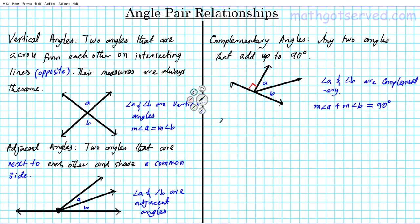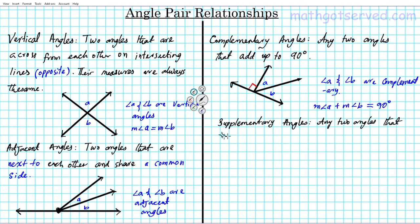The next terminology to keep in mind is supplementary angles. What are supplementary angles? This one also refers to magnitude — not position, just magnitude, the size of the angles. Supplementary angles are any two angles that add up to 180 degrees.